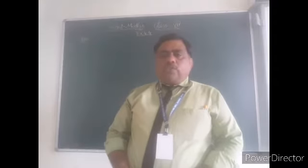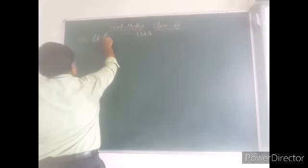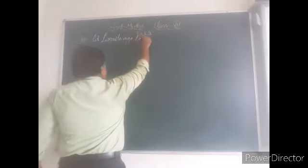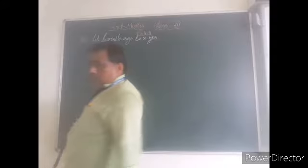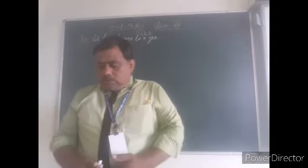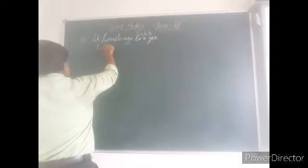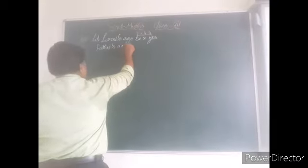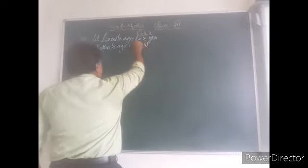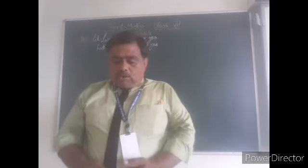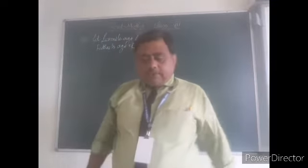Let Lakshmi's age be X. So his father is 4 more than 3 times Lakshmi's age. Father's age is equal to 3X plus 4. Now, Lakshmi's father is 49 years old.